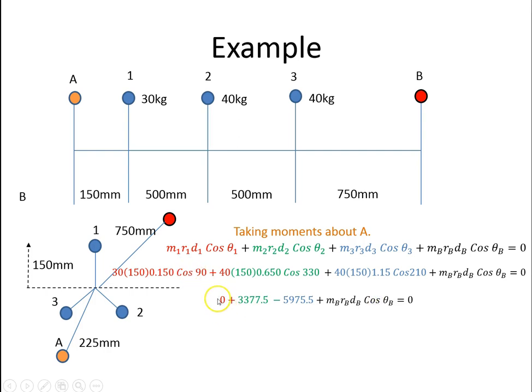When I calculate those values out, I get 0 for this, I get 3377.5 for that, minus 5975 for this, and MbRbdB cosine θB equals 0. So rearranging that, we get a value for MbRbdB cosine θB.